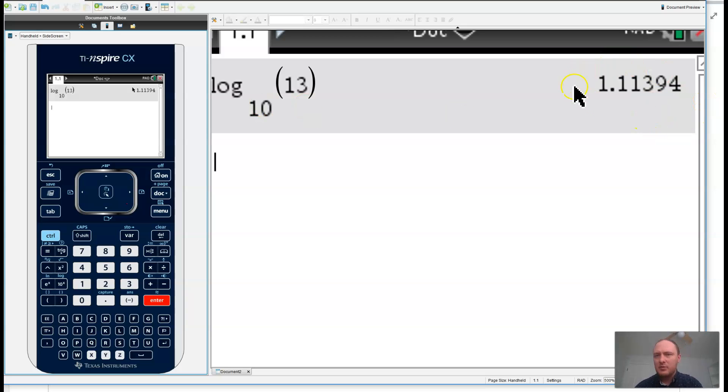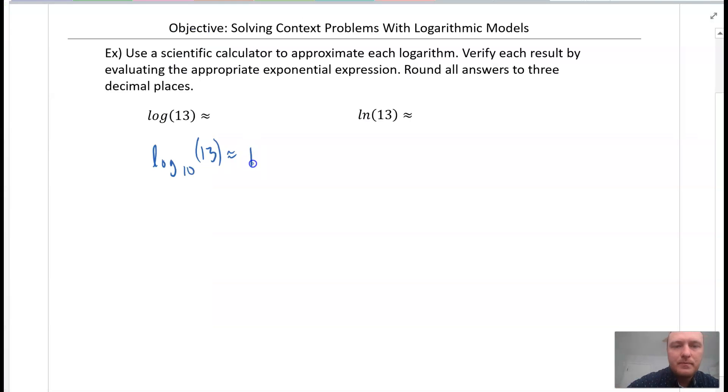And we get this value, and we want three decimal places or more. So 1.114.